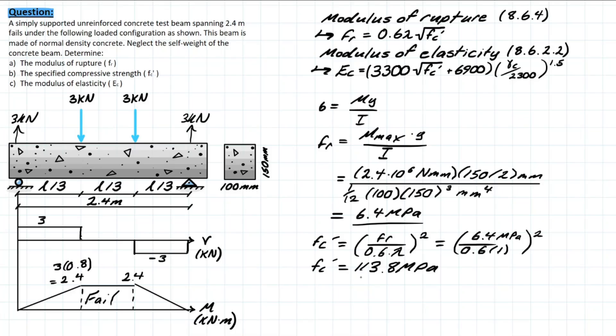Lastly, it's asking us to determine the modulus of elasticity, so we're simply going to be plugging in our design variables once again into this formula where we have 3300 times the root of the compressive strength, so 113.8 plus 6900, and then for an unreinforced beam that unit weight is going to be around 1700, but once again these numbers are pretty arbitrary. Then we plug that last number in to give us a final solved value of 26,755 MPa.